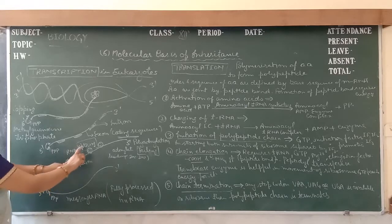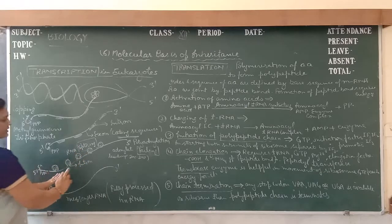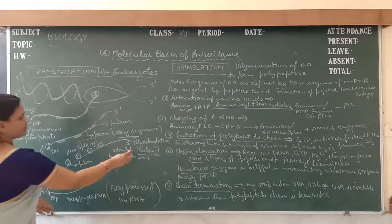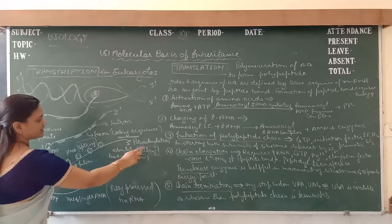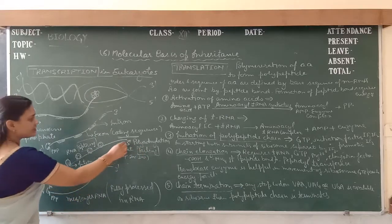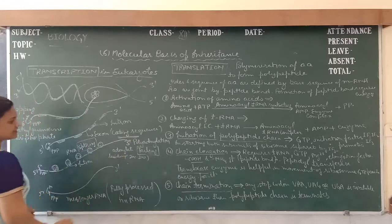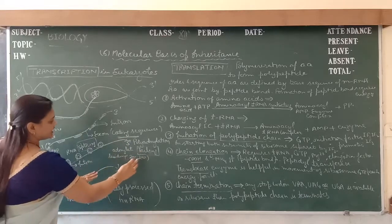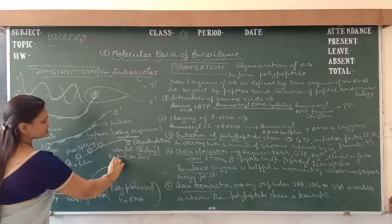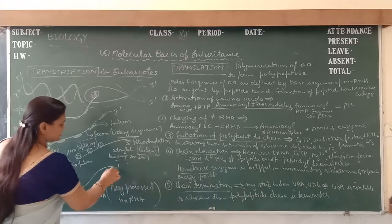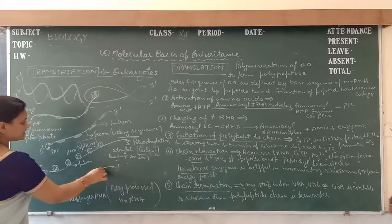RNA splicing is the removal of introns and joining of exons. Joining of exons is also known as splicing. The last process is polyadenylation. Polyadenylation is expressed at the 3' end. In this process, adenylate residues — about 200 to 300 residues — are joined at the 3' end.